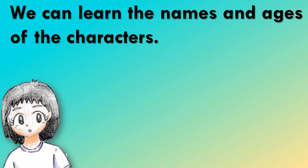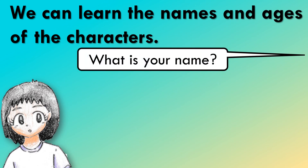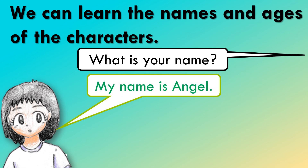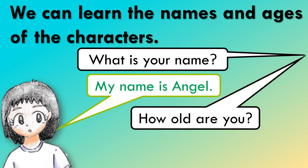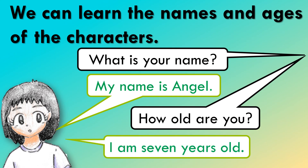This is the last character we will meet. What is your name? My name is Angel. How old are you? I am seven years old. And those are the four characters that we will see.